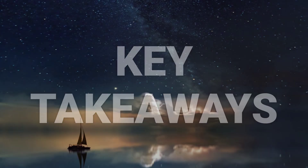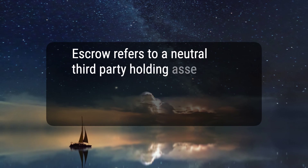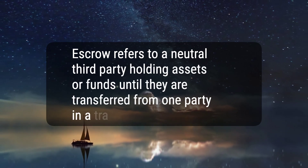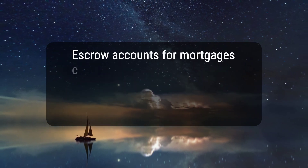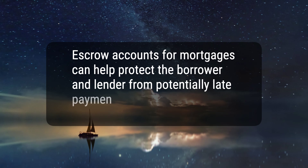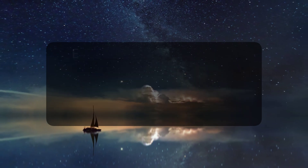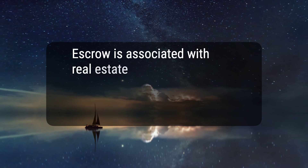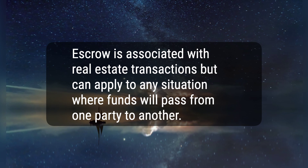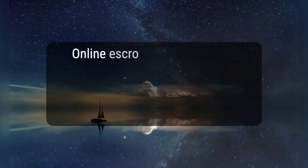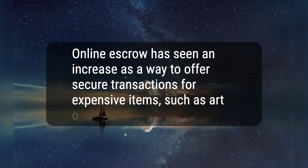Here are four key takeaways. 1. Escrow refers to a neutral third-party holding assets or funds until they are transferred from one party in a transaction to another. 2. Escrow accounts for mortgages can help protect the borrower and lender from potentially late payments for property taxes and homeowners' insurance. 3. Escrow is associated with real estate transactions but can apply to any situation where funds will pass from one party to another. 4. Online escrow has seen an increase as a way to offer secure transactions for expensive items, such as art or jewelry.